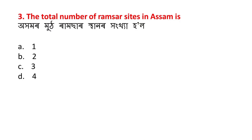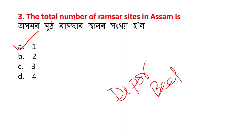The total number of Ramsar sites in Assam — how many Ramsar sites are there? The answer is A: 1. Assam has only 1 Ramsar site, which is Deepor Beel.